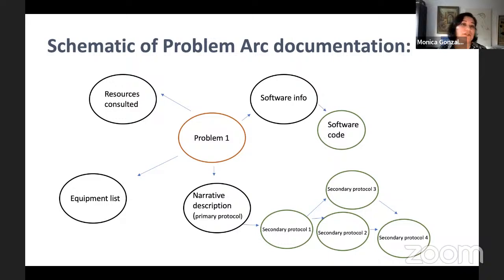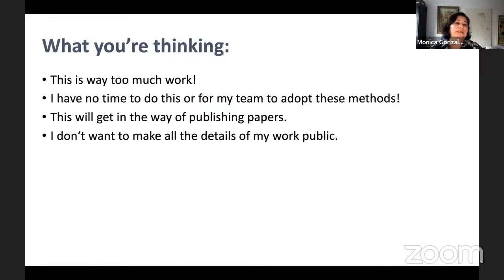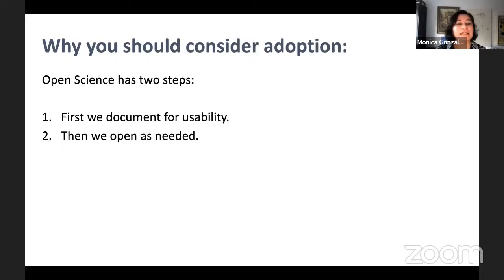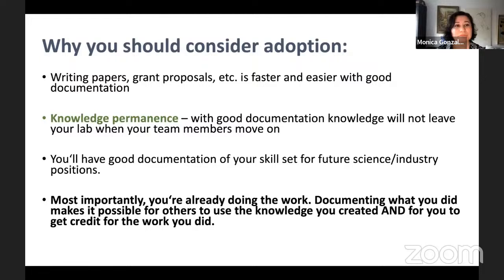You might be thinking: this is way too much work, I have no time, it will get in the way of publishing papers, or I don't want to make the details of my work public. At this point I'll remind you: open science actually has two steps. First, we document for usability — and this is the part we need to do a lot more of. Then we can argue about making it open and which parts should be open. First we document.